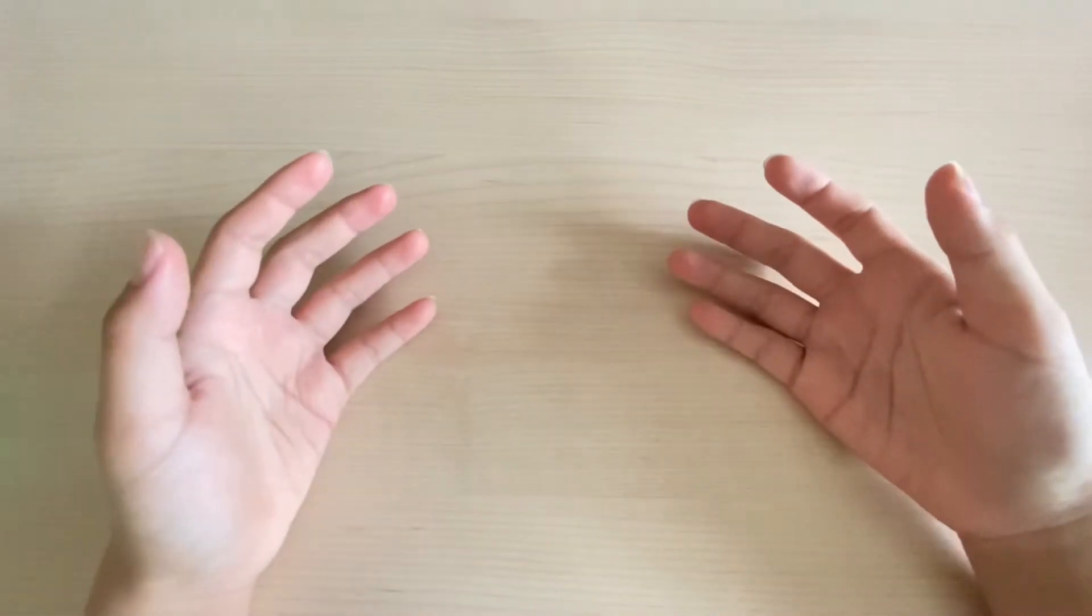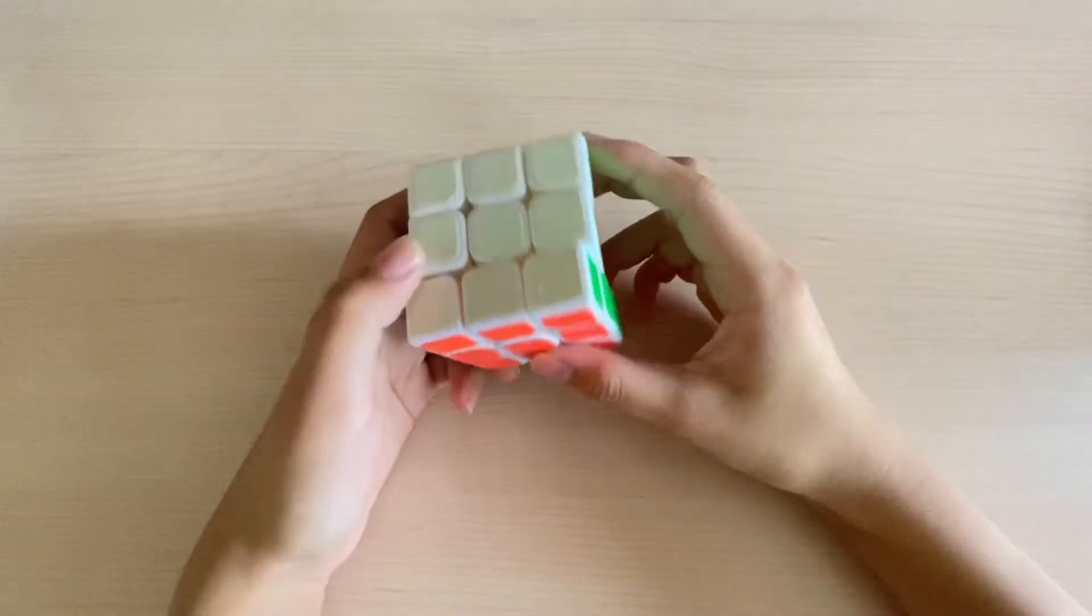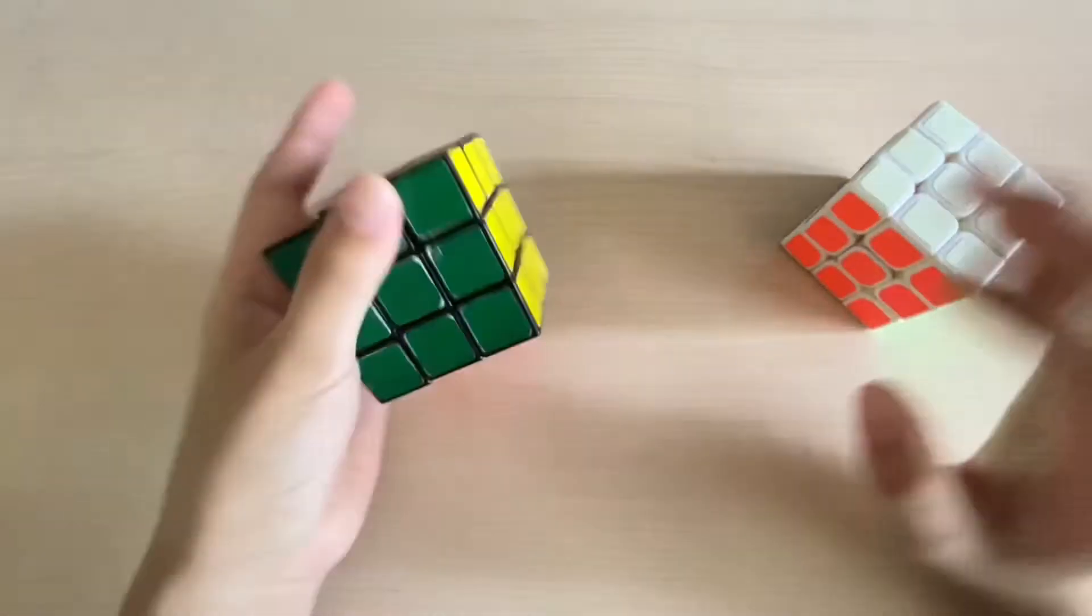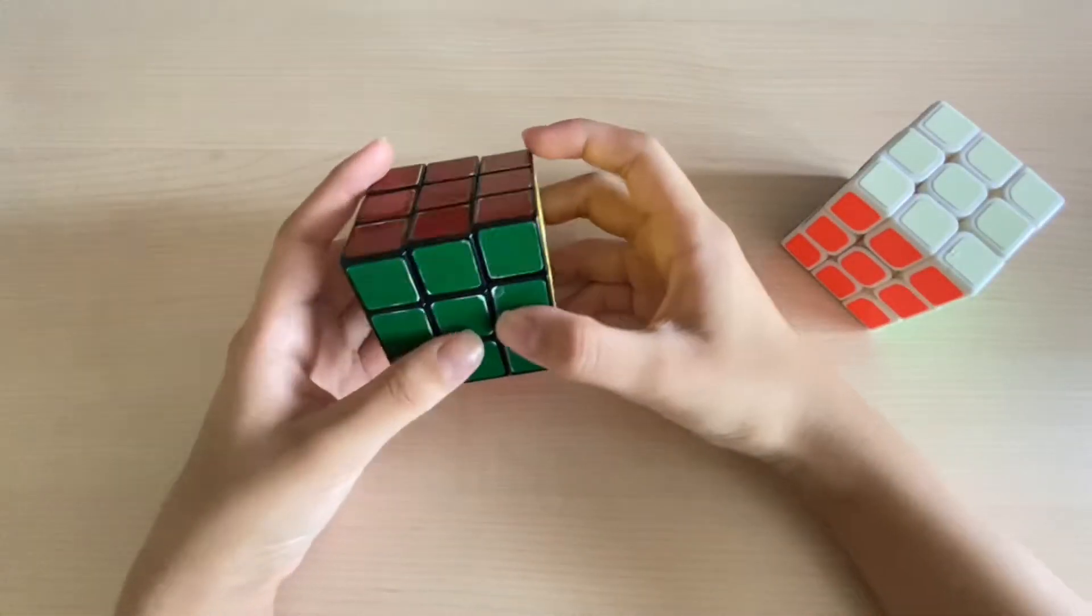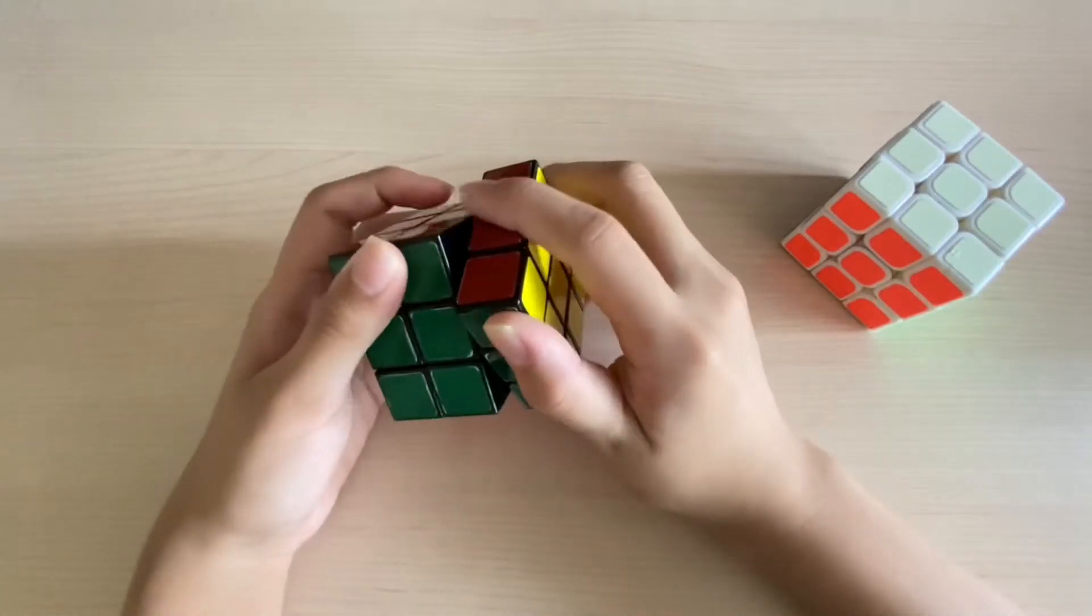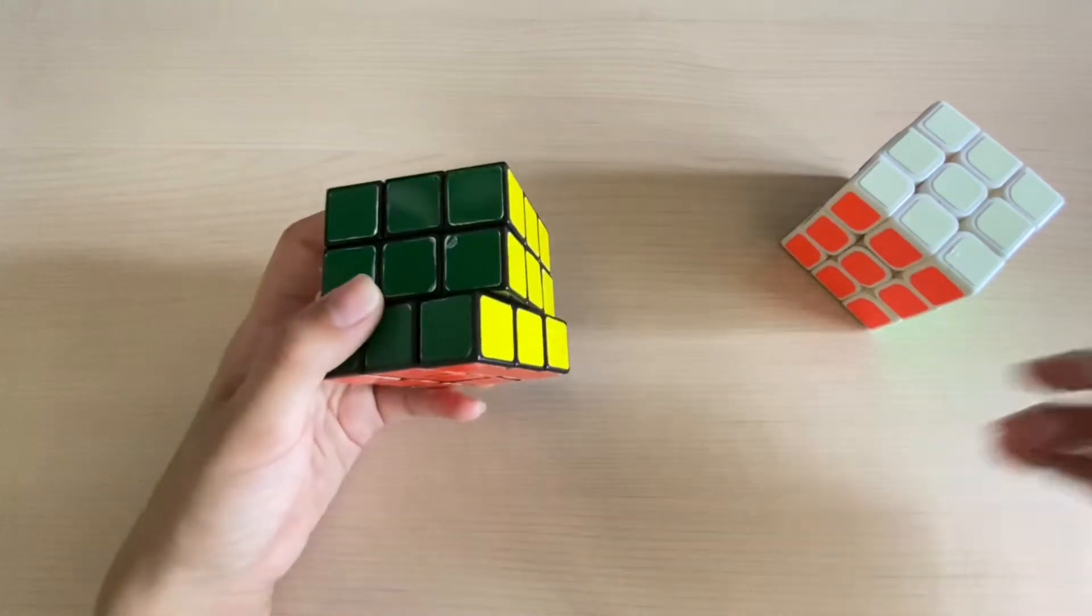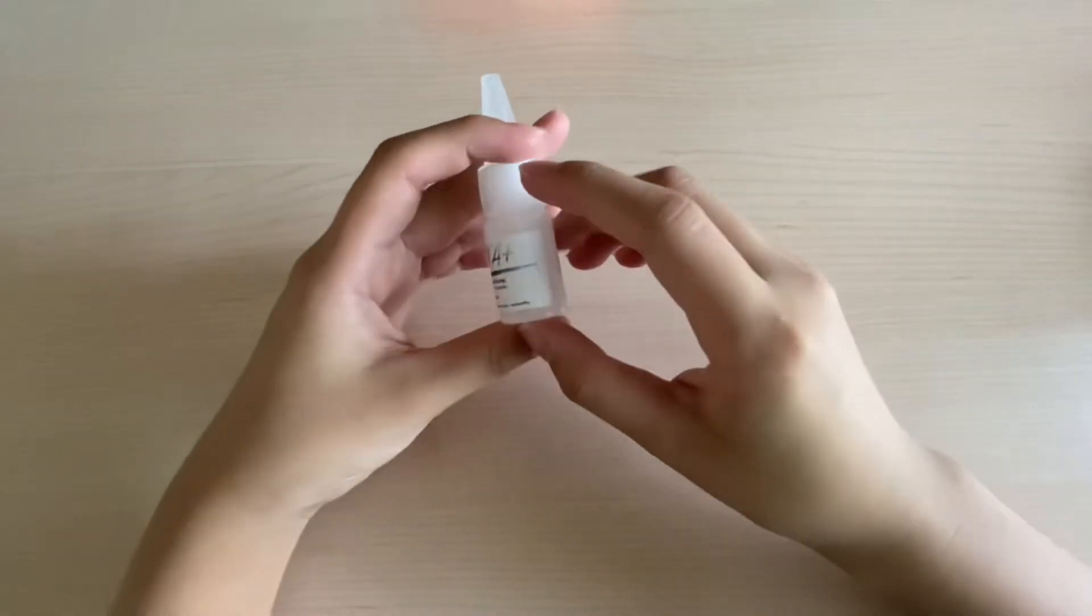We will be comparing two cubes here. There's this old Moyu cube and this dollar store cube. We'll be adding Vital Plus into it and see what's the effect of it. The lube I have here right now is the Vital Plus.